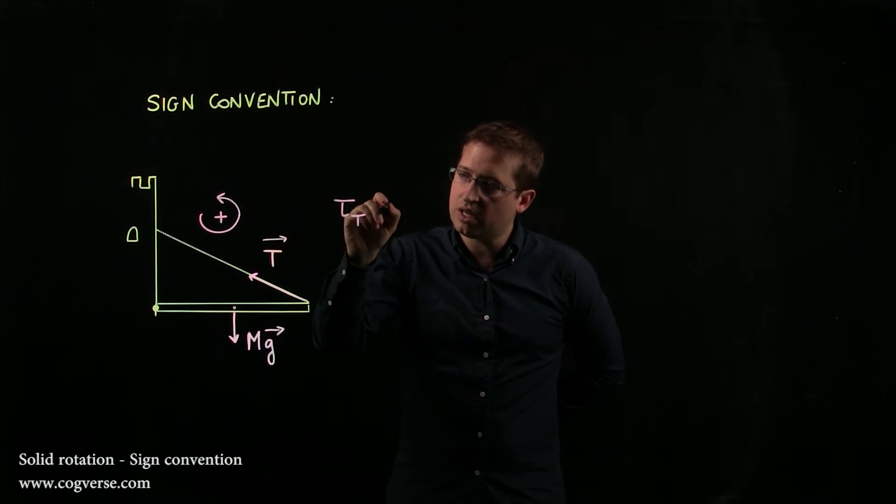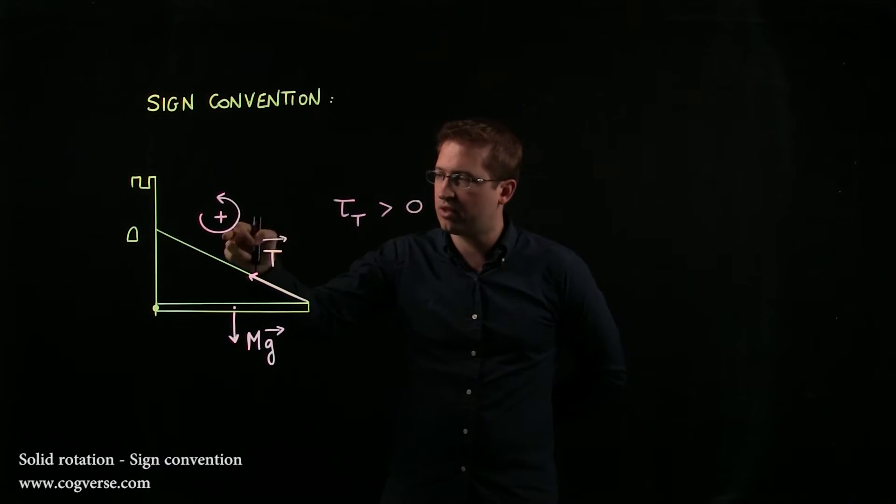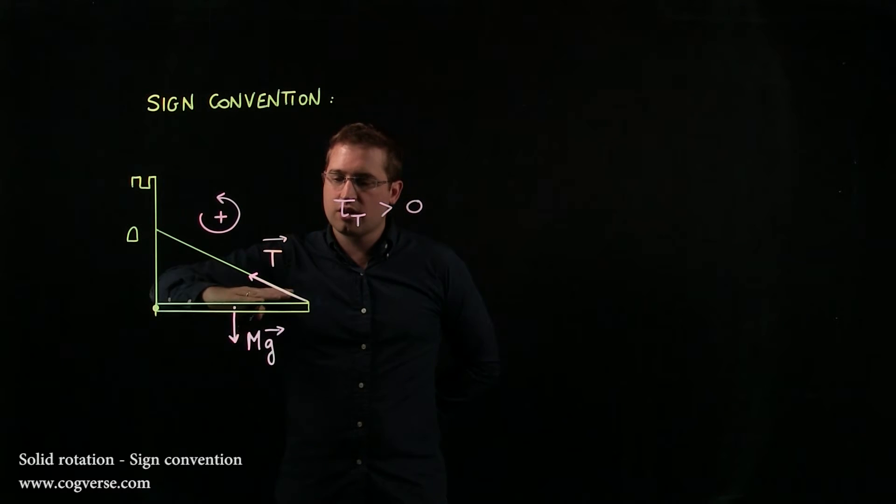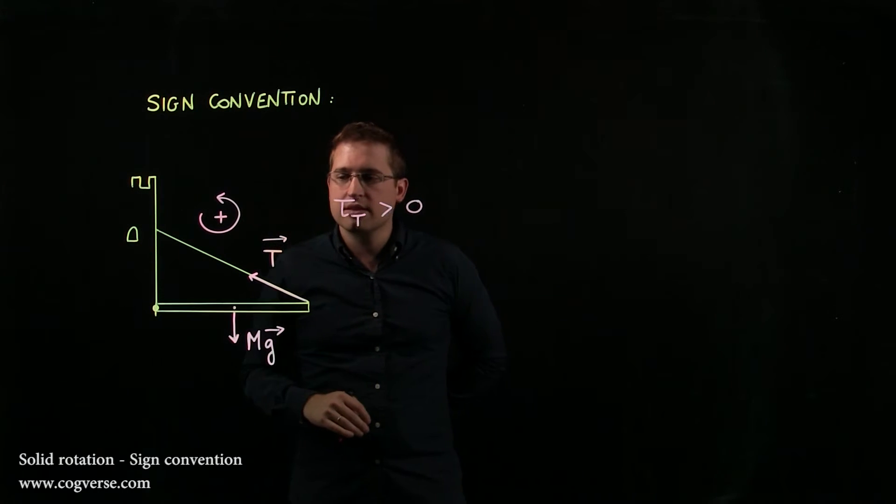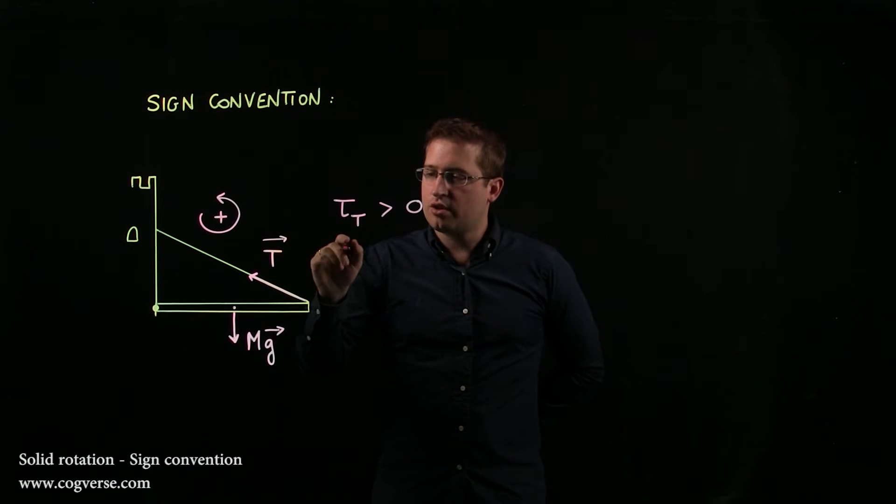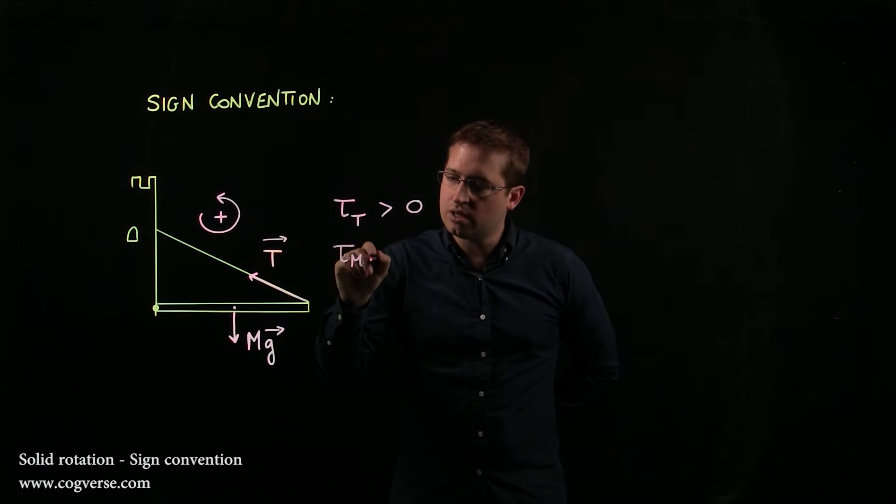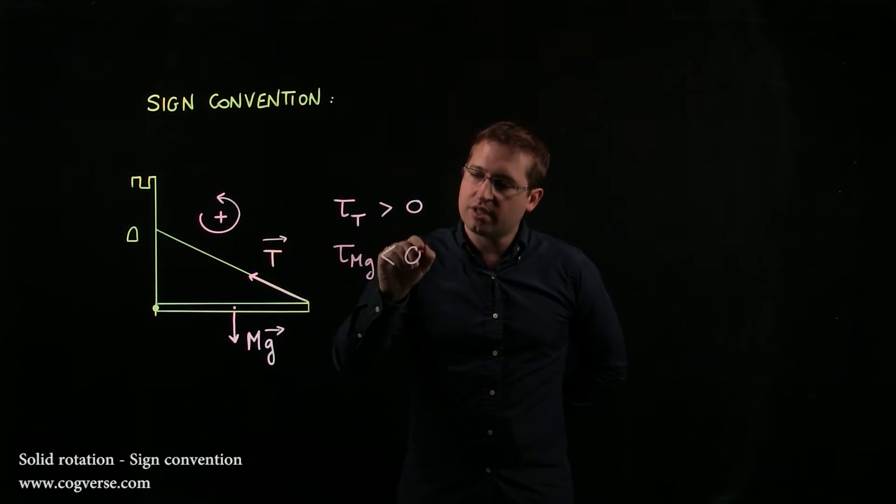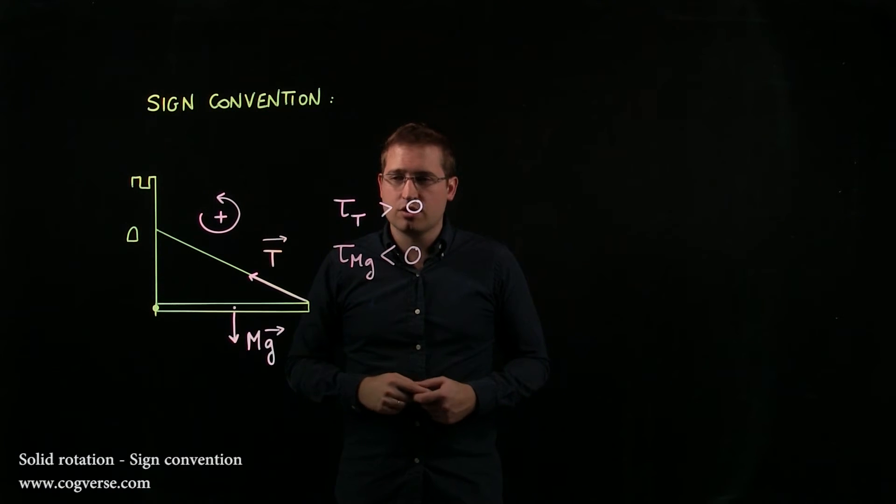So the torque due to tension is positive with this convention. MG on the other hand tries to rotate it like this and therefore the torque due to MG is negative because that would be a clockwise rotation.